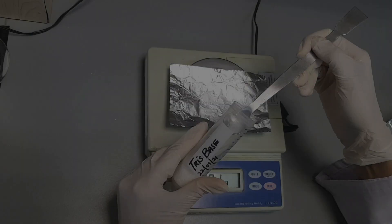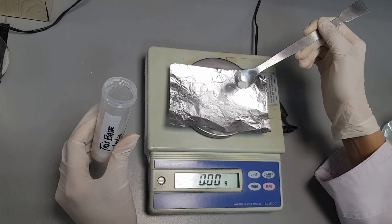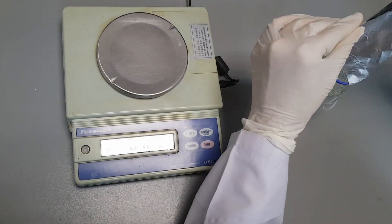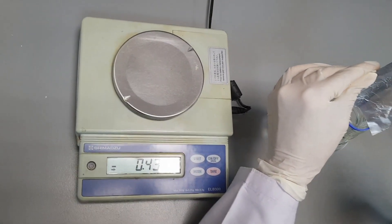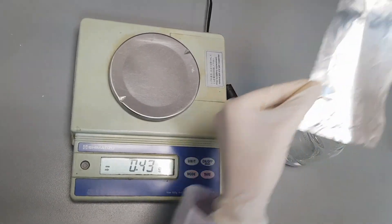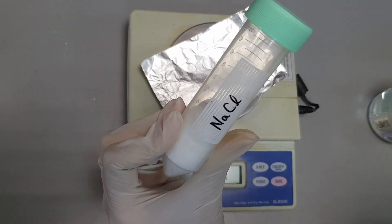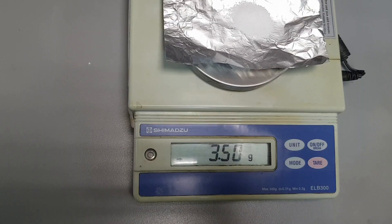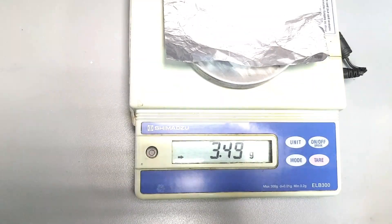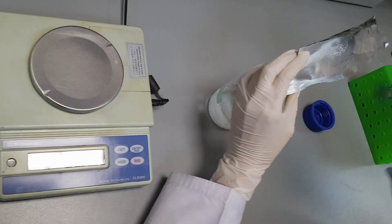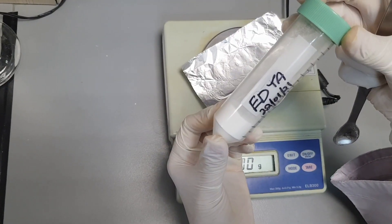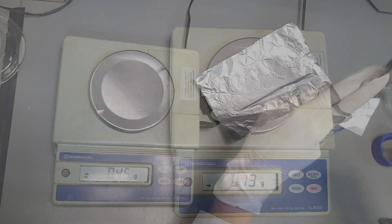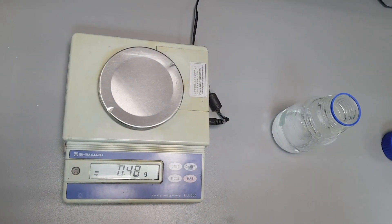Now by using a weighing balance, weigh out 0.18 grams of tris and add it to the reagent bottle. Now measure 3.5 grams of sodium chloride and add this to the reagent bottle. Now weigh out 0.1 gram of EDTA and put it in that 100 ml distilled water containing reagent bottle.